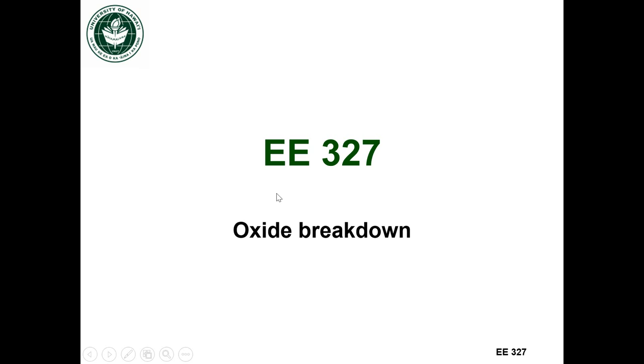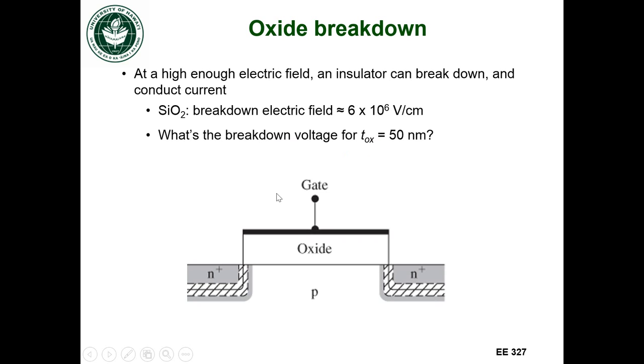So what's oxide breakdown? Well, if you have an insulator, such as silicon dioxide, if you put a high enough electric field across it, it can break down and conduct current. Same thing for any insulator.